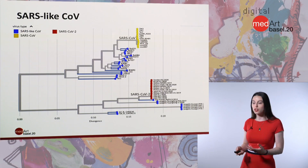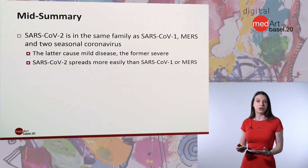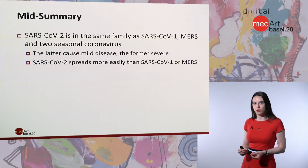As a midpoint summary: using genetics, we can tell that SARS-CoV-2 is in the same family as SARS-1, MERS, and two seasonal coronaviruses. It's important to point out that SARS-CoV-2 causes less severe disease than SARS-1, however it's more easily transmissible. SARS-1 was really only able to transmit when people had symptoms, and this made it easier to contain, which is why it didn't become a global pandemic.